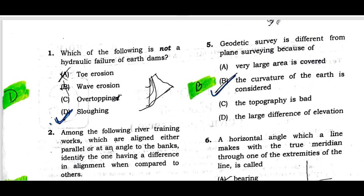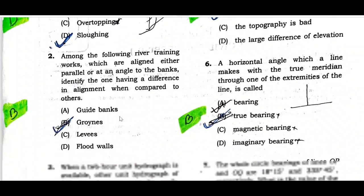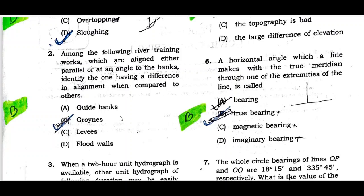Question number one: Which of the following is not a hydraulic failure of earth dams? Option D is the correct option. Question number two: Among the following river training works, which are aligned either parallel or at an angle to the banks — identify the one having a difference in alignment when compared to others. The correct option is option B.